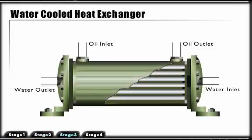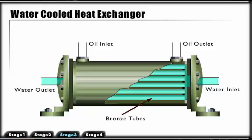If cooling water is available, a shell and tube heat exchanger may be preferred. Cooling water is circulated through a bundle of bronze tubes from one end cap to the other. Hydraulic fluid is circulated through the unit and around the tubes containing the water. The heat is removed from the hydraulic fluid by the water.